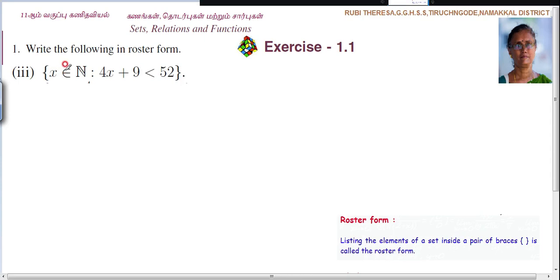So x is an element of natural number, that is x belongs to N such that 4x plus 9 is less than 52. So x is an element of natural number. Natural numbers are 1, 2, 3, 4, 5, 6, etc. In the place of x, what are you going to substitute? These natural numbers you have to substitute. It should satisfy this condition: 4x plus 9 should be less than 52 when you are substituting the number.